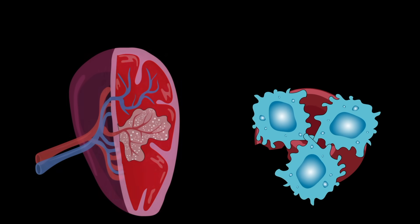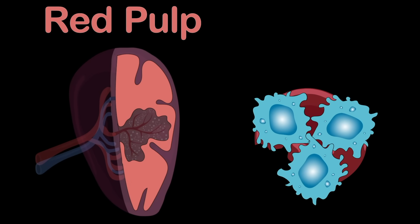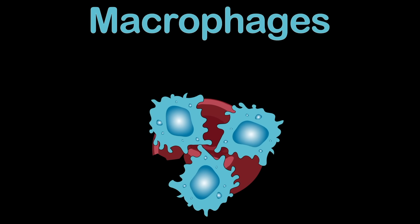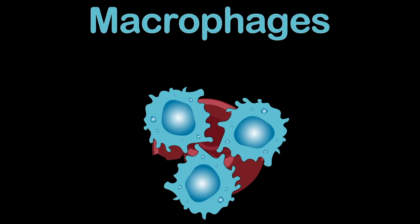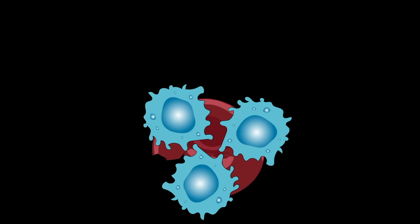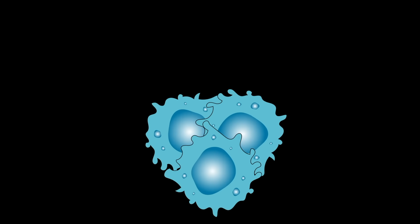This all happens in the red pulp tissue that we talked about. These macrophages' main job is to filter all the damaged cells out. These old red blood cells are turned into conjugated bilirubin, which is excreted through bile out of your body.